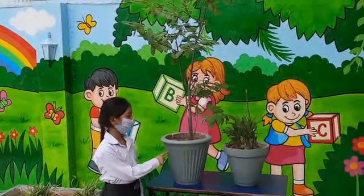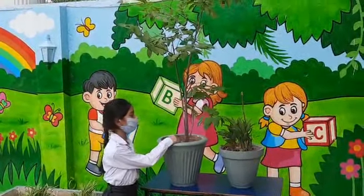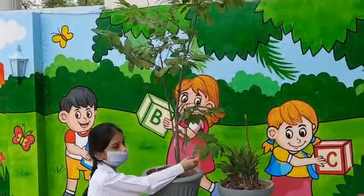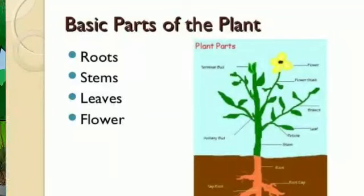This is a pot. These are roots. This is a stem. These are leaves.